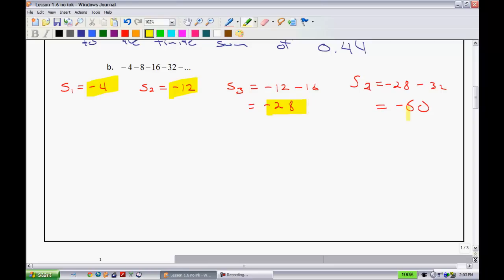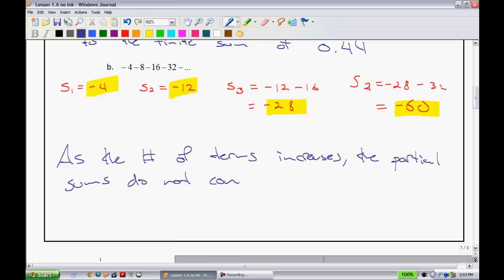What do you notice about all of these? They definitely aren't converging towards anything. What we can say is, as the number of terms increases, partial sums do not converge. They just get more and more negative, not like the last one where everything was pretty much the same. The series does not have a finite sum.